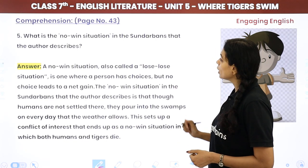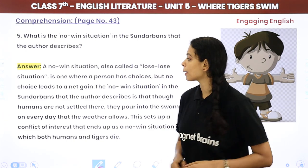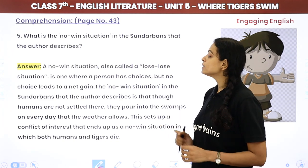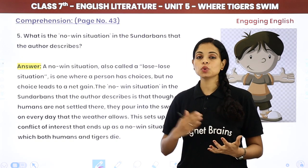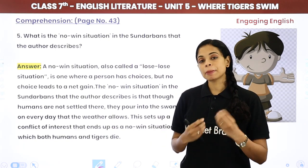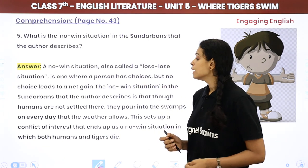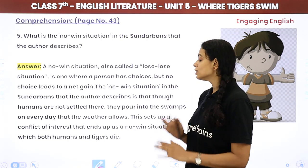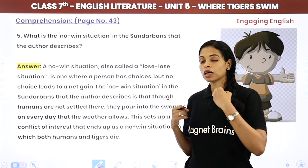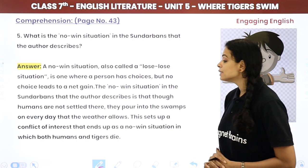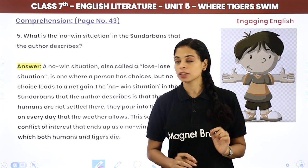What is the no-win situation in the Sundarbans that the author describes? A no-win situation, also called a lose-lose situation, is one where a person has choices but no choice leads to a net gain. The no-win situation in the Sundarbans is that though humans are not settled there, they pour into the swamps on every day that the weather allows. This sets up a conflict of interest that ends up as a no-win situation in which both humans and tigers die.